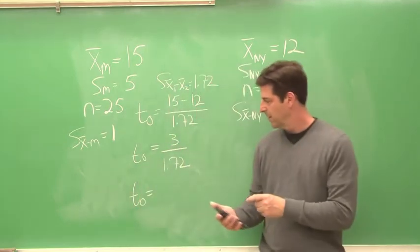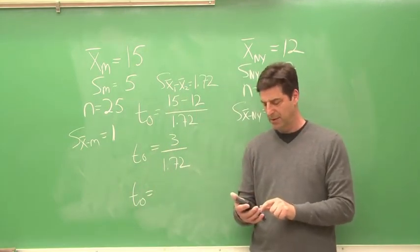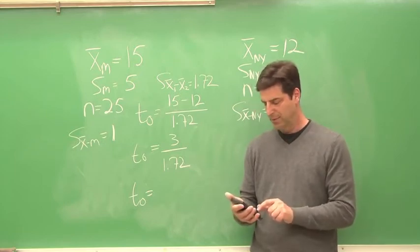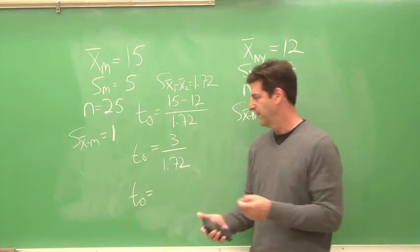So our observed T value is 3 divided by 1.72, and that's 1.74.